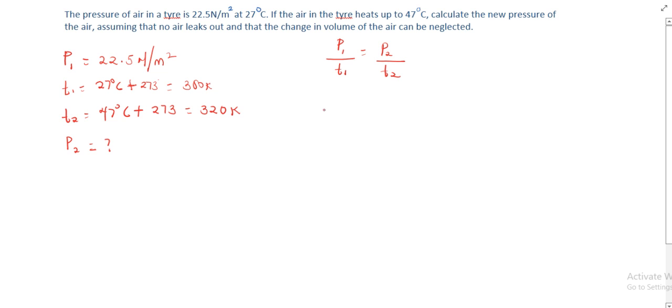So let's put in our parameters now. Our P1 is 22.5 divided by T1, which is 300, equals P2, which is the unknown, divided by T2, which is 320.